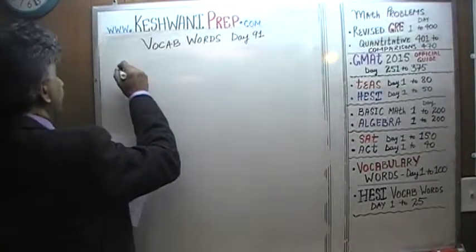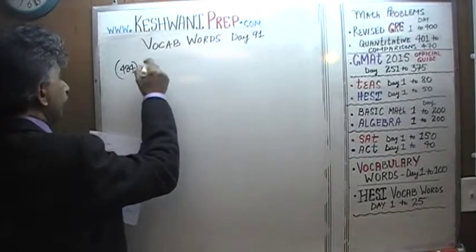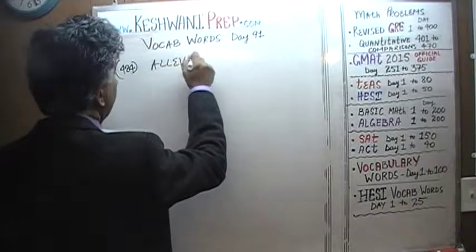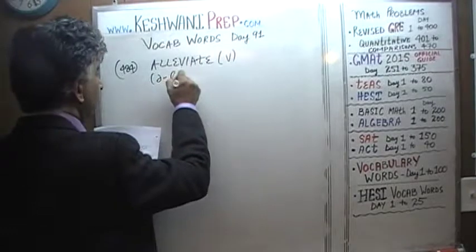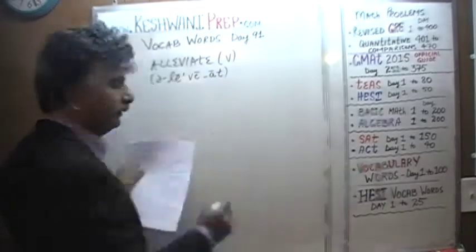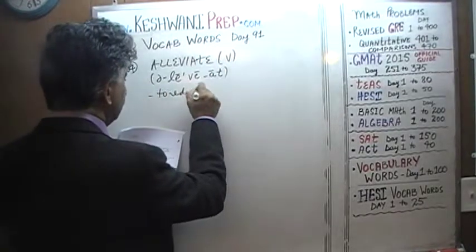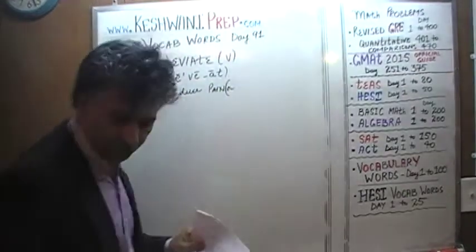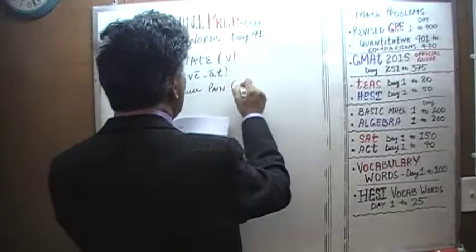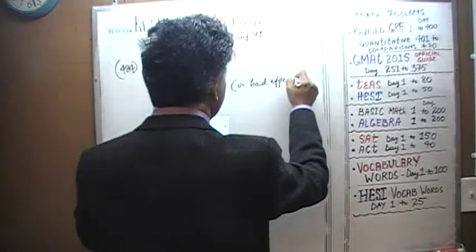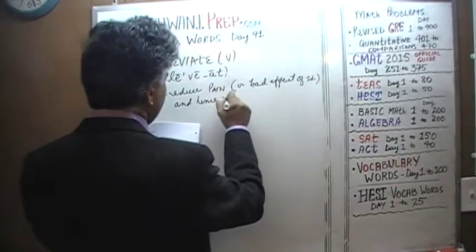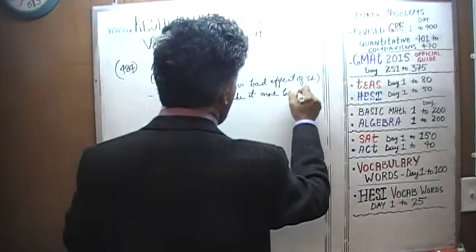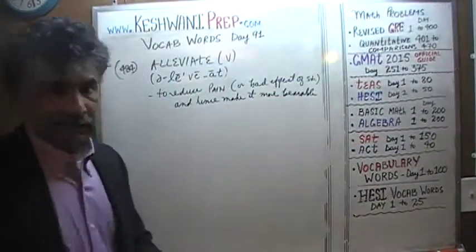The very first word we have today, word number 484, is 'alleviate.' It's a verb. Alleviate means to reduce pain or the bad effect of something, and hence make it more bearable. Alleviate does not mean to get rid of it.